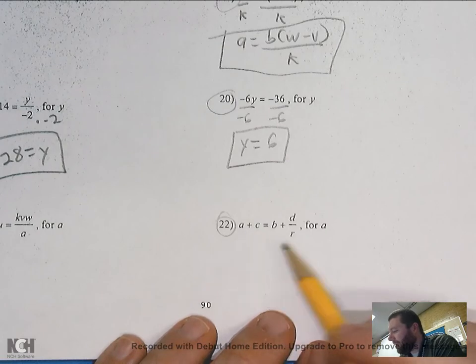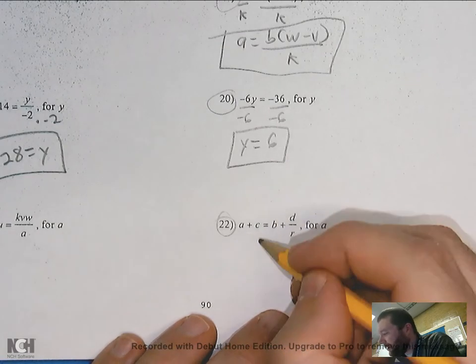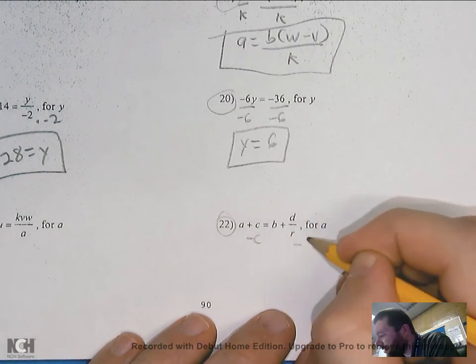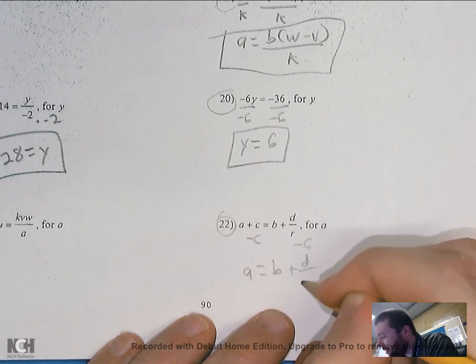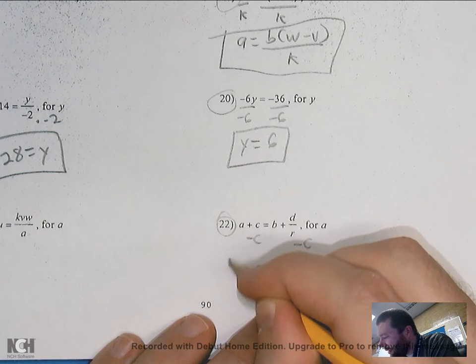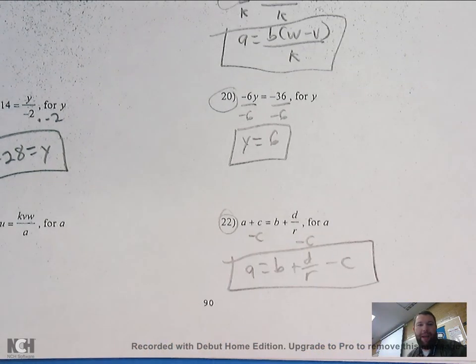Last one, a plus c. And I'm solving for a. So I've got to get rid of that c. So I'd minus c to each side. a is equal to (b plus d) over r minus c. a is by itself. I'm done. And that is the one-step literal equations.